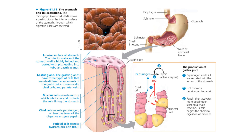The gastric glands have three types of cells that secrete the different components of gastric juice. First, mucus cells secrete mucus, which lubricates and protects the cells lining the stomach. The parietal cells secrete hydrogen and chloride ions, which combine in the lumen of the stomach to form hydrochloric acid. Chief cells secrete pepsinogen, the inactive form of the enzyme pepsin.